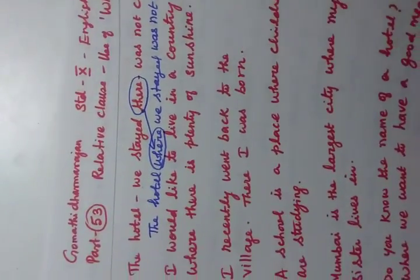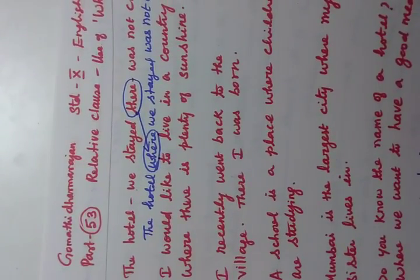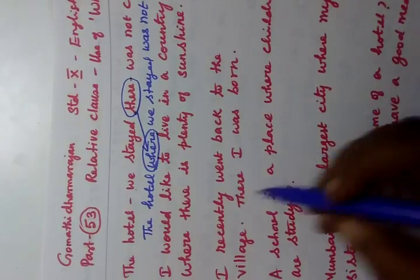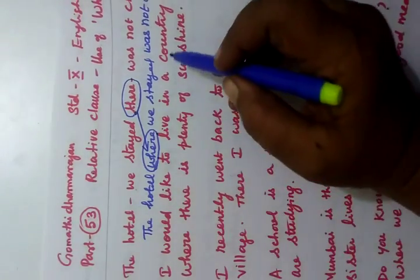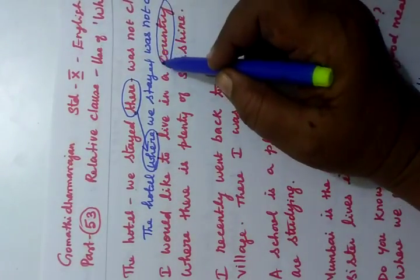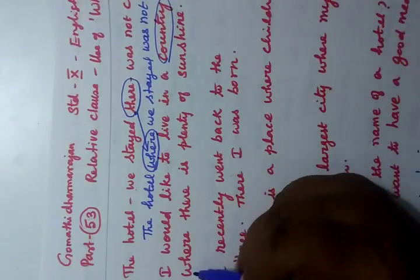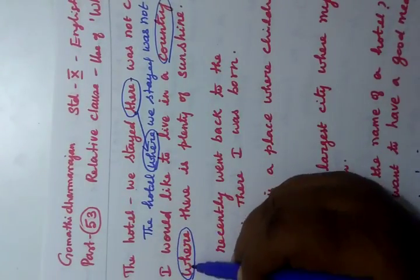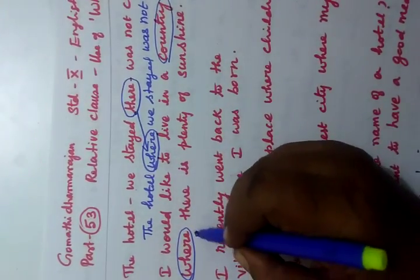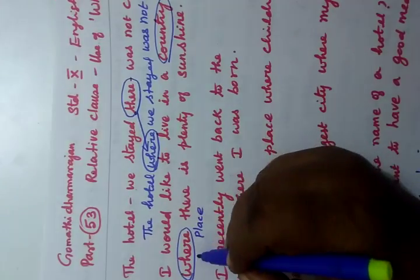Now you see the second one. 'I would like to live in a country where there is plenty of sunshine.' In that country you have the place, so for that you are using 'where'. So where you are using place.